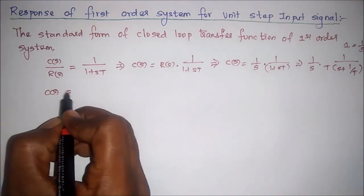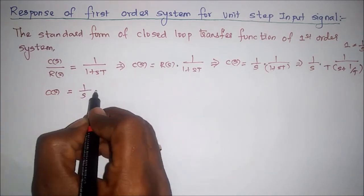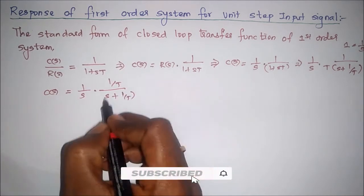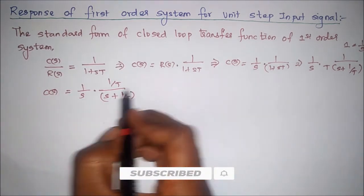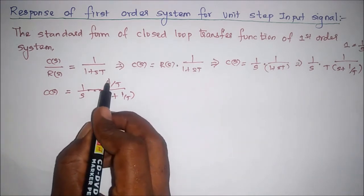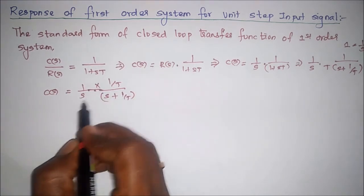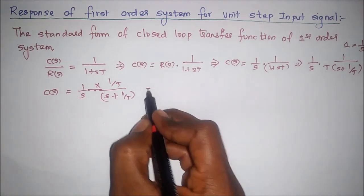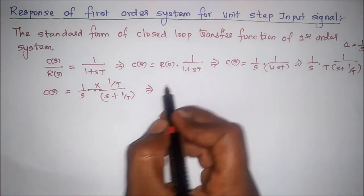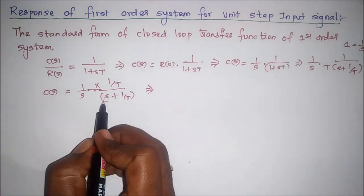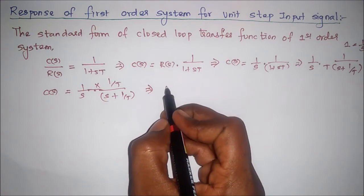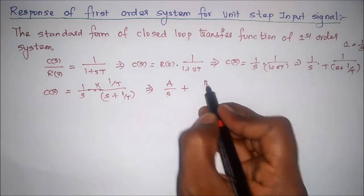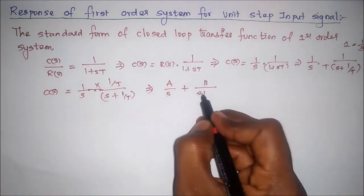We can write C(s) equal to 1 by s into (1/T) divided by (s plus 1/T). This can be expressed as (1/T) divided by s into (s plus 1/T). Now we can apply partial fractions. There are two separate poles, so we write A divided by s for the first pole and B divided by (s plus 1/T) for the second pole.